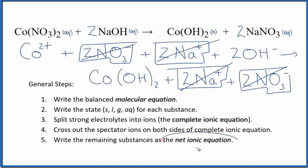What's left, that's the net ionic equation for Co(NO3)2 plus NaOH. I'll clean this up, write the states. We'll have our net ionic equation.